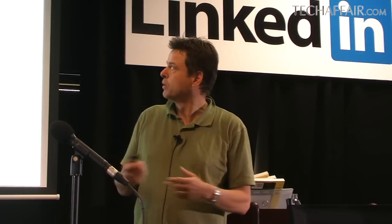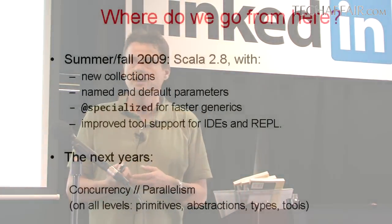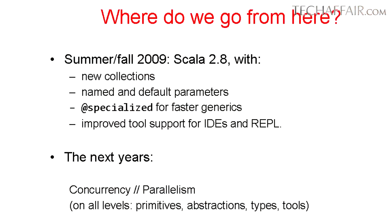So where do we go from there? Our next planned version is Scala 2.8, which will have a redesigned collection library with a very clean, uniform design. It will have named and default parameters as a language extension. Probably what I'm most excited about is it will have a way to make generics much, much faster than before with a specialized annotation — tailoring generic implementations for the primitive types you use them on. That's something you won't find in Java and it will give you much better performance.